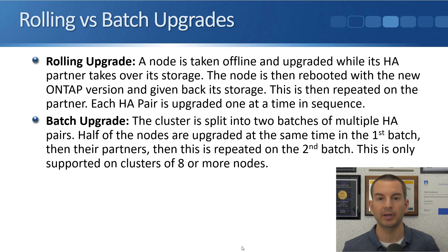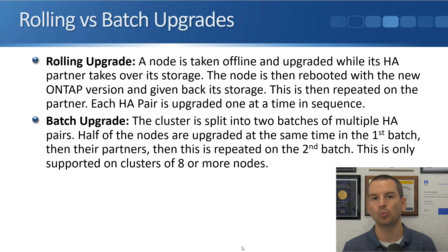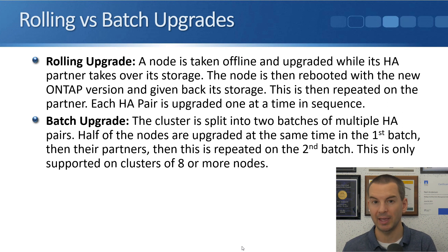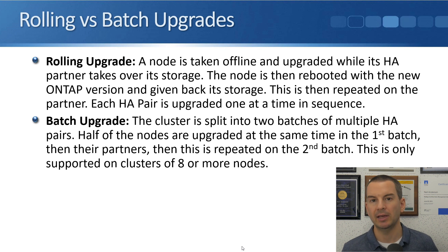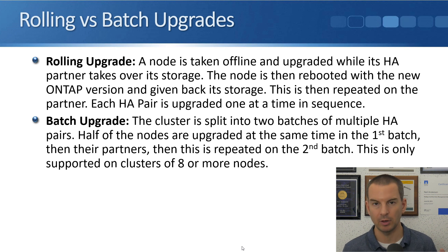There are two types of upgrades that can be performed: either a rolling upgrade or a batch upgrade. With a rolling upgrade, each node is upgraded one at a time. When a node is being upgraded it is taken offline, and while that is happening its HA partner has taken over its storage. Once the new version of ONTAP has been put on that node it reboots with the new version and takes control of its storage back. That is then repeated on the partner node, and each HA pair is upgraded like this one at a time in sequence until it's all done. It takes around half an hour or so for each node to be upgraded.